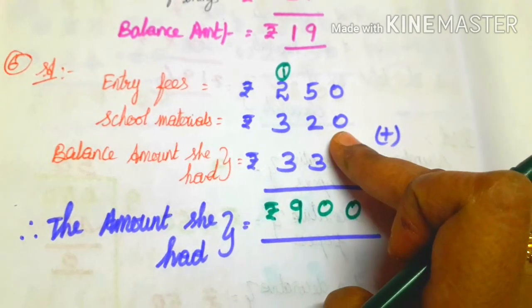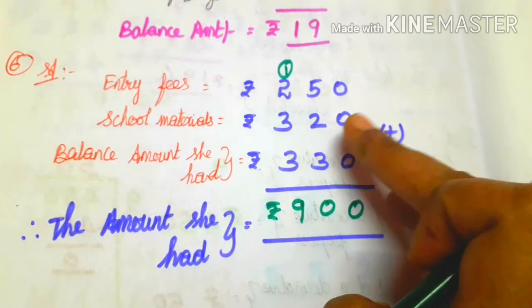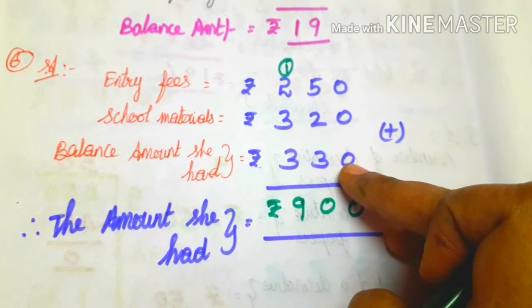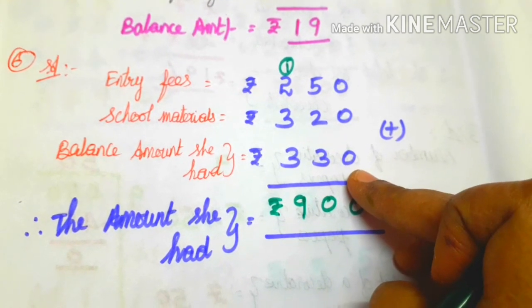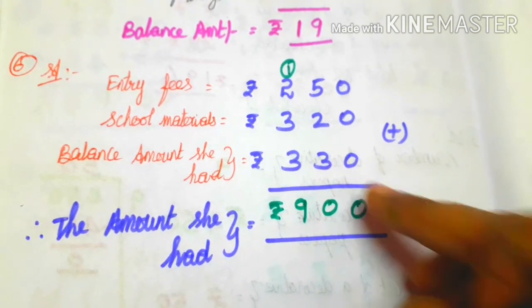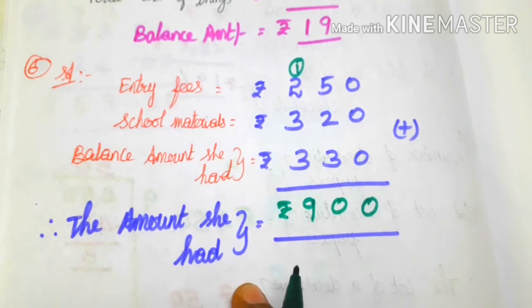Therefore the total amount she had is 900 rupees: entry fees 250 plus school materials 320 plus balance 330 rupees.